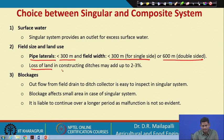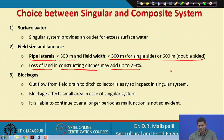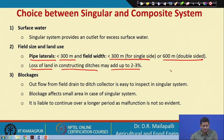The loss of land in constructing ditches may add up to 2 to 3 percent in case of the singular system, because the singular system requires constructing an open ditch, which is a kind of loss of land in construction. That will add up to 2 to 3 percent of the construction cost.